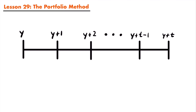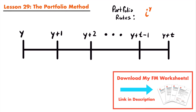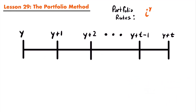Even though the rate is changing from year to year, whatever that rate is, it is applied to all investments in that fund. We call those rates portfolio rates and denote them with i superscript Y, where Y is the year that the interest rate is credited — the year that that particular rate is active. If we look at a timeline here covering various different years, the first year would be represented with Y.